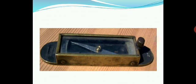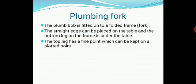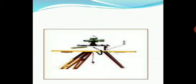This image shows the trough compass comprising needles. The next component is the plumbing fork. A plumb bob is fitted onto a folded frame — the straight edge can be placed on the table, and the bottom leg of the frame hangs under the table. The top leg has a fine point which can be kept along the plotted points.